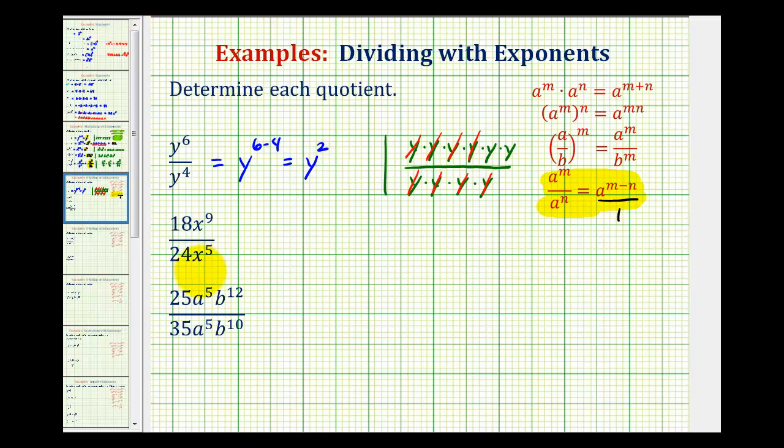Looking at the second example, we can view this like two problems. We need to simplify the fraction 18 24ths, and then simplify x to the ninth divided by x to the fifth.